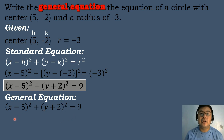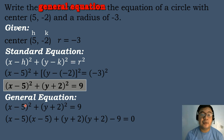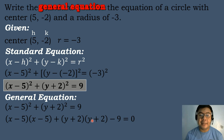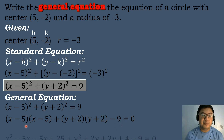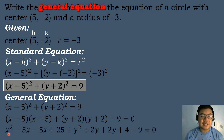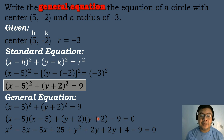Let's use the FOIL method to expand the equation. We have x minus 5 to the second power, which is the quantity of x minus 5 times x minus 5, plus y plus 2 to the second power, which is the quantity of y plus 2 times y plus 2. Positive 9 will be transposed to the other side and become negative 9. Multiplying: x times x equals x squared; x times negative 5 equals negative 5x; negative 5 times x equals negative 5x; negative 5 times negative 5 equals positive 25. Plus: y times y equals y squared; y times 2 equals positive 2y; 2 times y equals positive 2y; and 2 times 2 equals 4, minus 9.